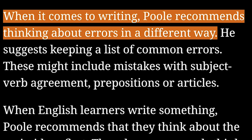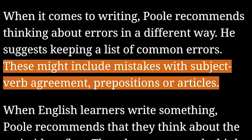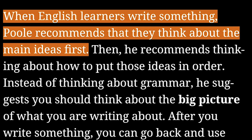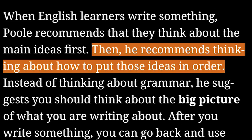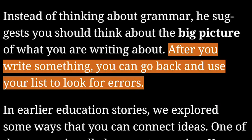He suggests keeping a list of common errors. These might include mistakes with subject-verb agreement, prepositions, or articles. When English learners write something, Poole recommends that they think about the main ideas first. Then, he recommends thinking about how to put those ideas in order. Instead of thinking about grammar, he suggests you should think about the big picture of what you are writing about. After you write something, you can go back and use your list to look for errors.